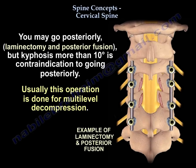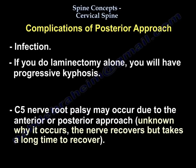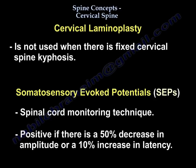You can go posteriorly with laminectomy and posterior fusion, but kyphosis more than 10 degrees is a contraindication to going posteriorly. You do this operation for multi-level compression. Complications of the posterior approach include infection, and if you do laminectomy alone you will have progressive kyphosis. C5 nerve root palsy can occur from anterior or posterior approach — nobody knows why, but the nerve recovers, though it takes a long time.